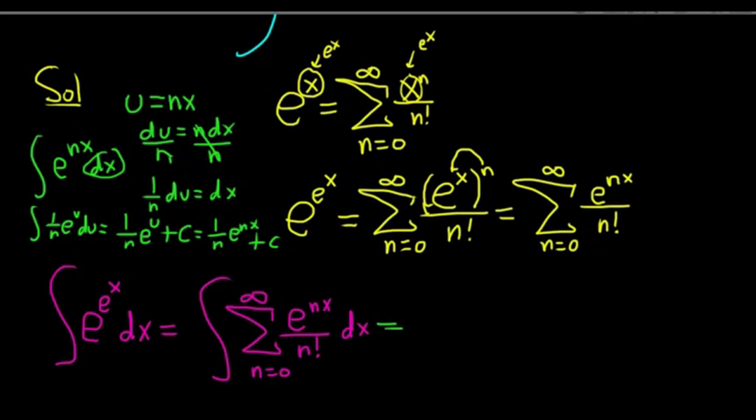So this is equal to the infinite sum as n runs from 0 to infinity. We have e to the nx, and then this hangs out—this is a constant, you just leave it alone. So we just divide by n. So we have n times n factorial, plus c.